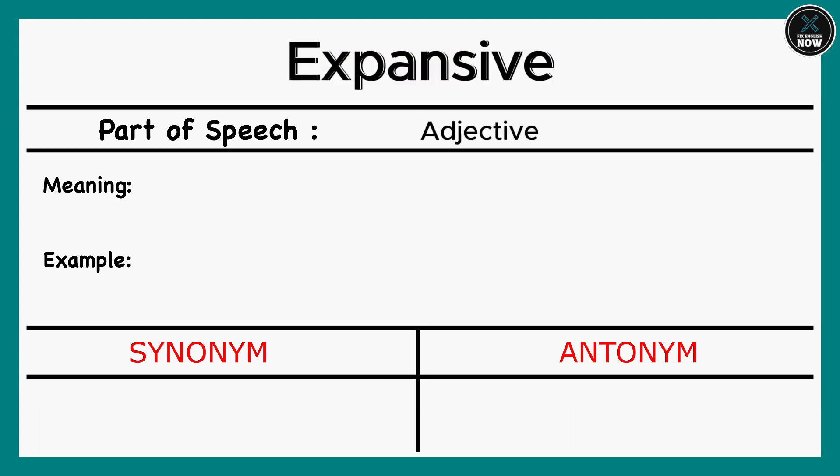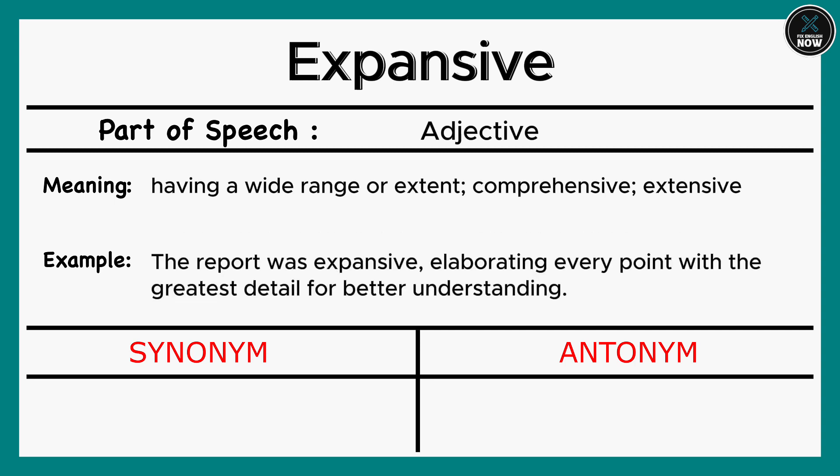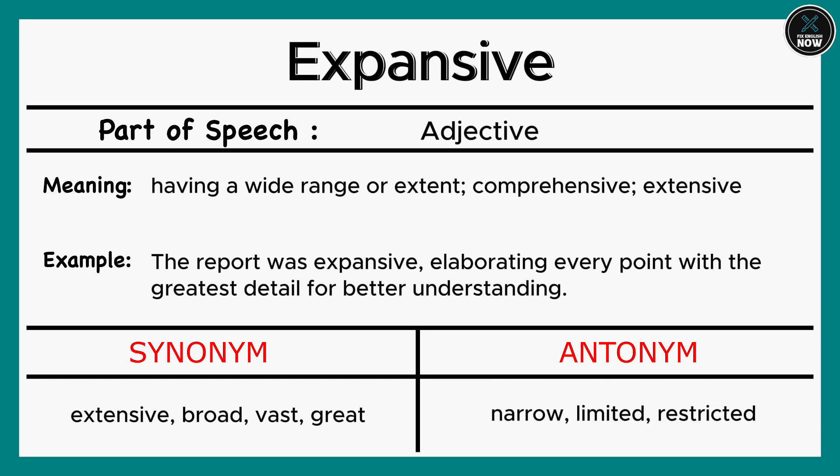Expansive: Having a wide range or extent; comprehensive; extensive. Example: The report was expansive, elaborating every point with the greatest detail for better understanding. Synonyms: Extensive, Broad, Vast, Great. Antonyms: Narrow, Limited, Restricted.